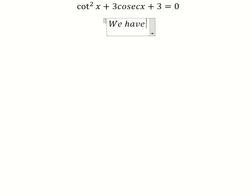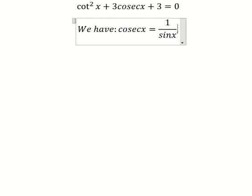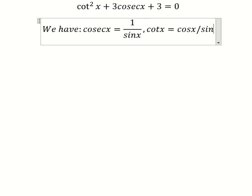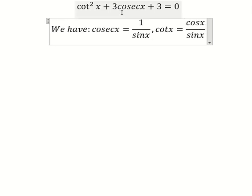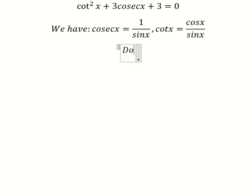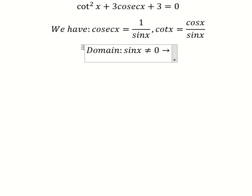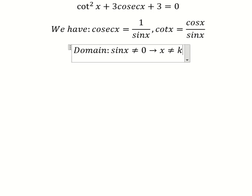Hello everybody. Today I want to show you how to find the general solutions. We have the formula here. If we look carefully, this one we have one over sine x, and this one we have cosine x over sine x. We need to set up the domain — that means sine x cannot equal zero, so s cannot equal kπ, where k belongs to the integers.